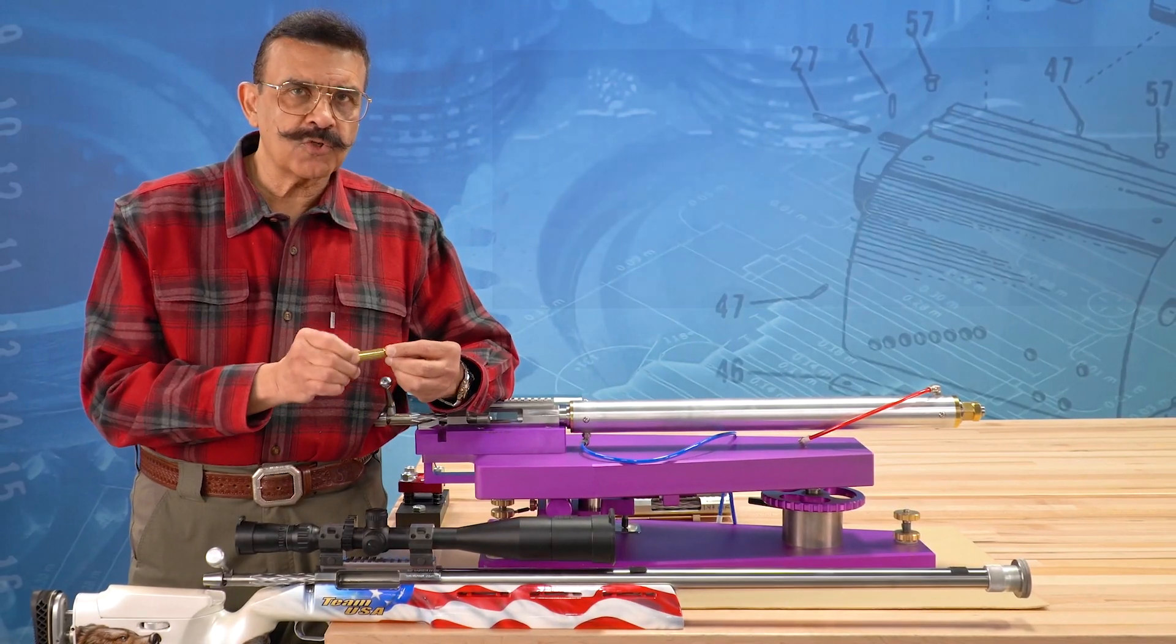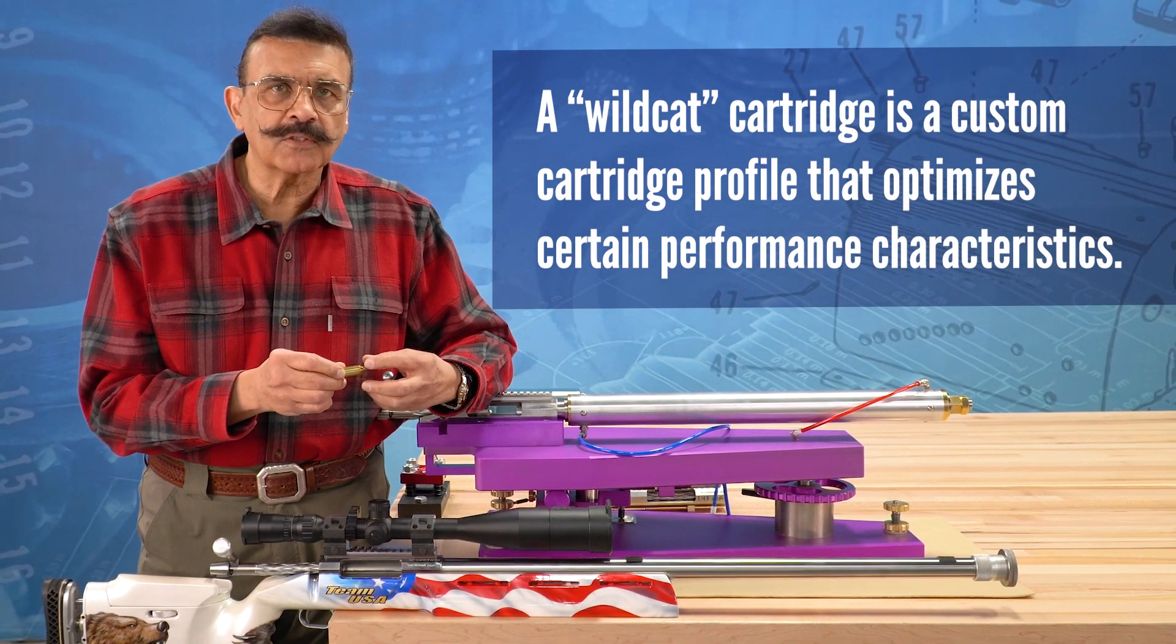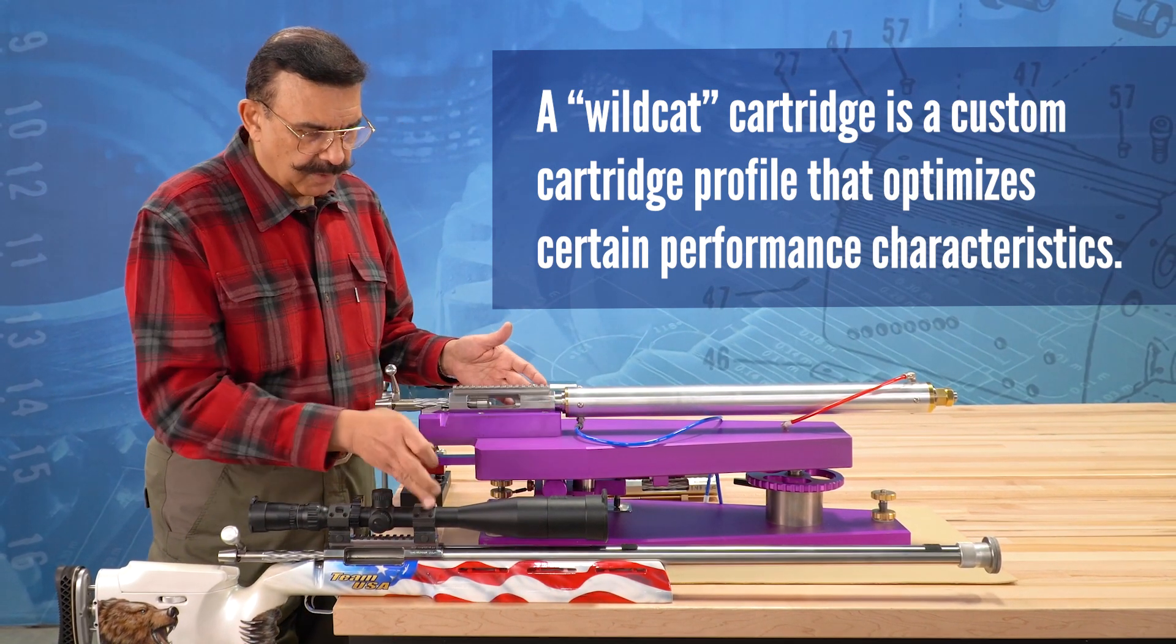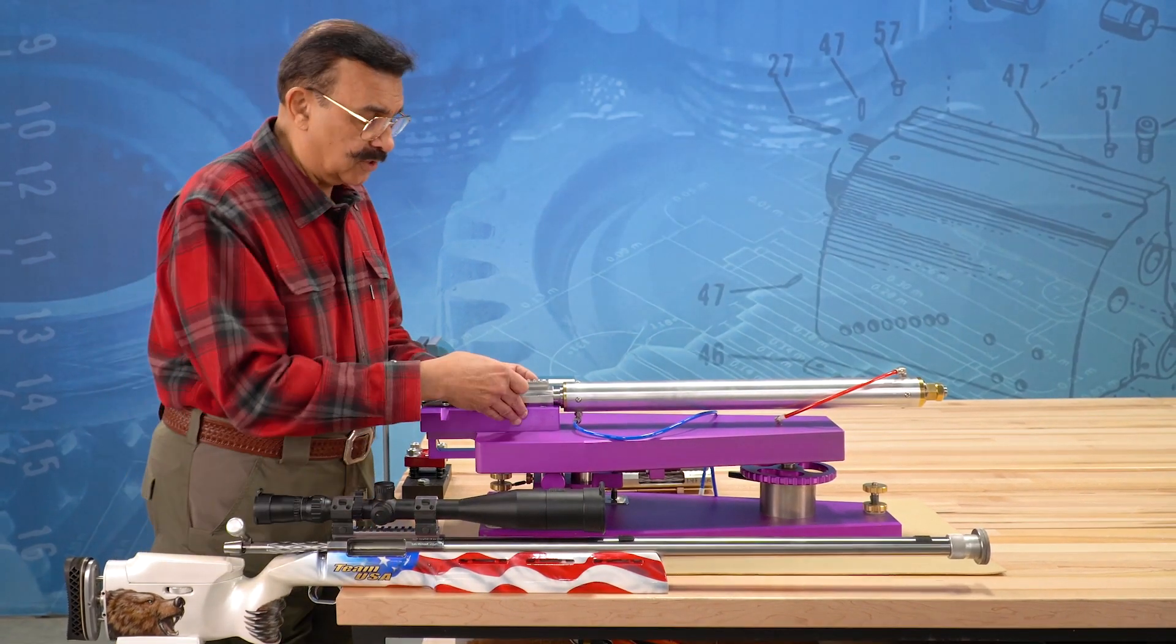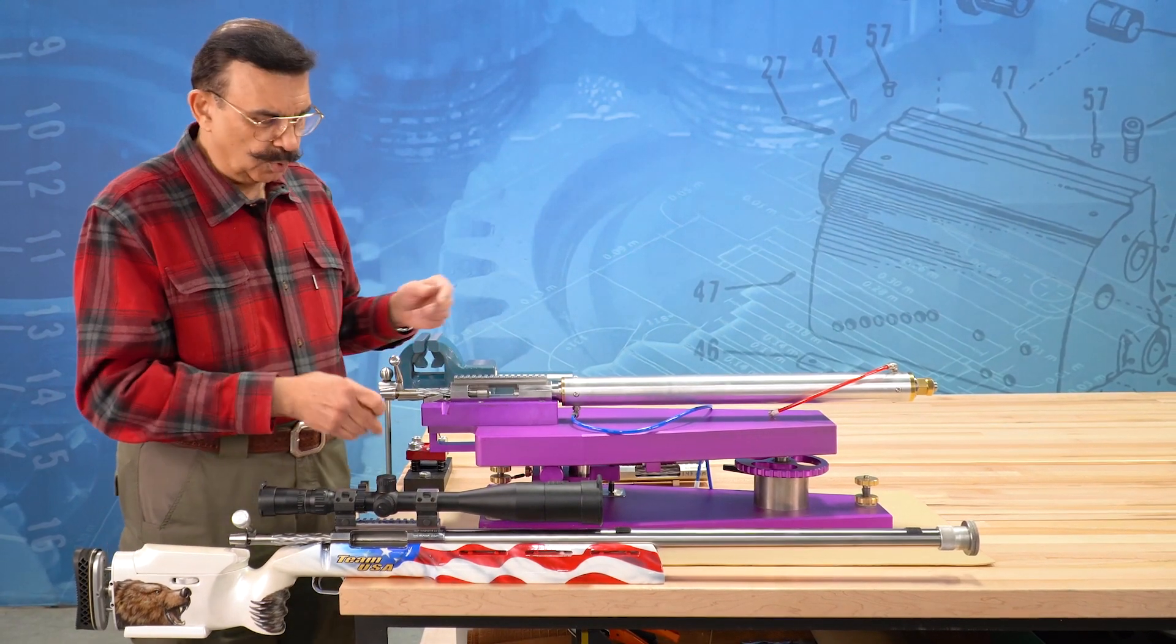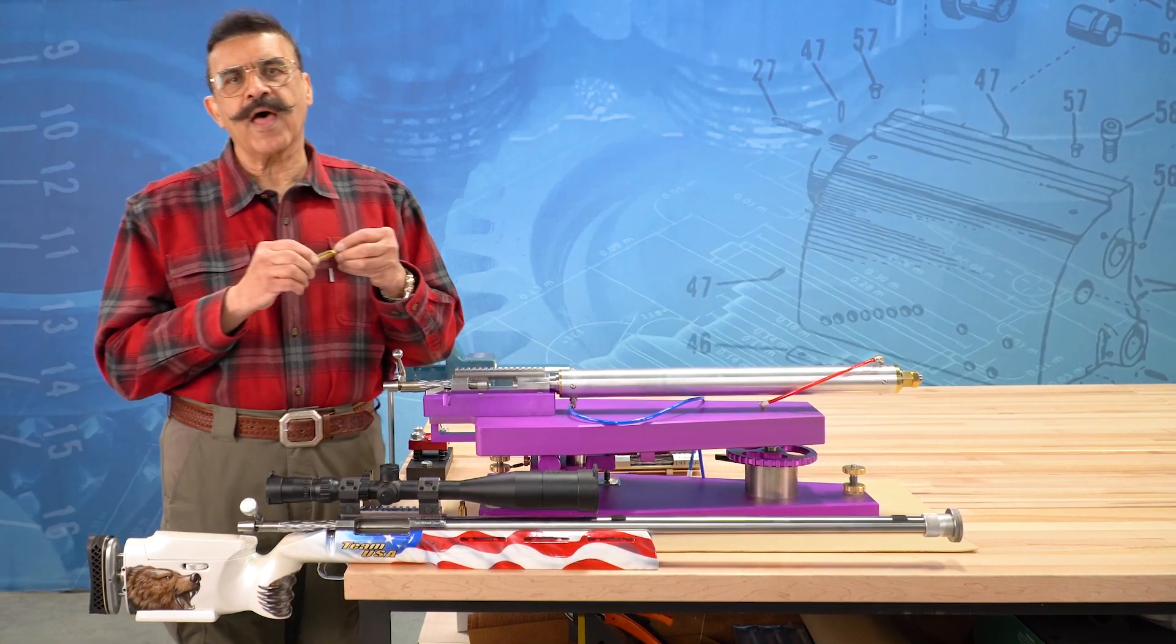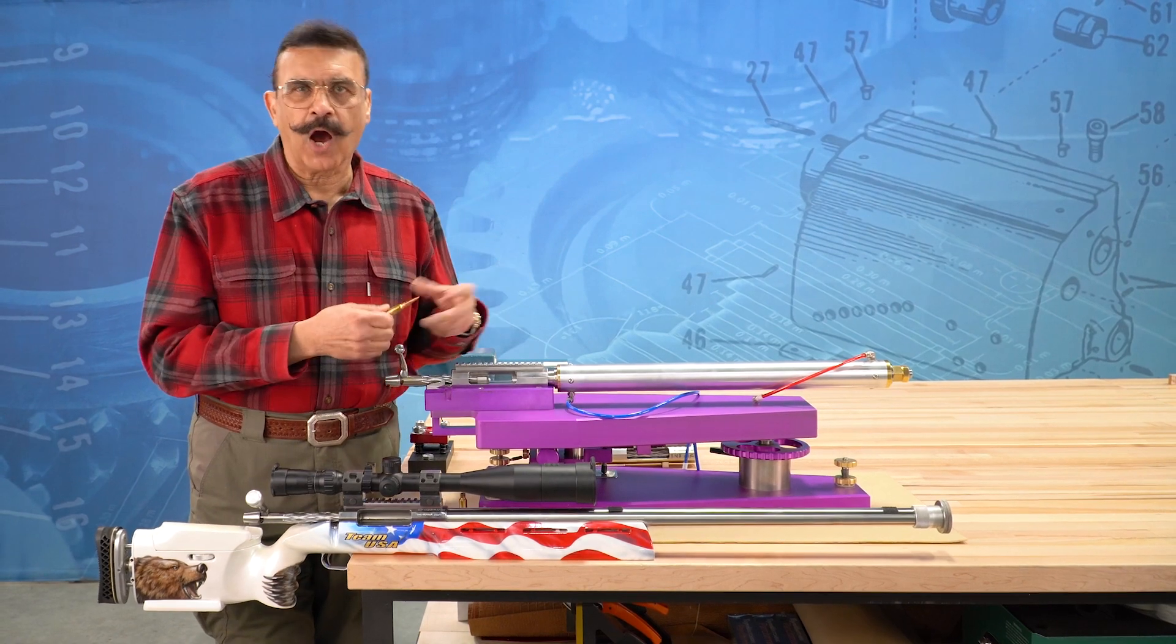Wildcatters use it for forming their brass to a specific size that they want. In this case, this particular chamber, this is a different chamber than this. This is a 300 WSM that I shoot in matches. This is a 284 Shiraz, a 284 case that is blown out a little bit more so that I can put more powder in it. F open shooters are hot rodders basically.